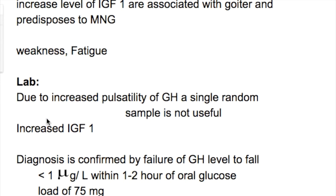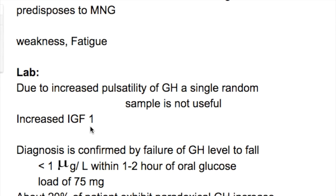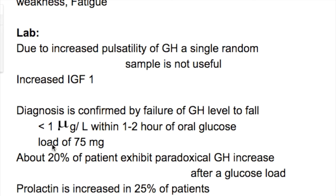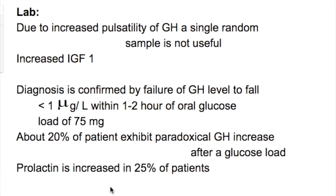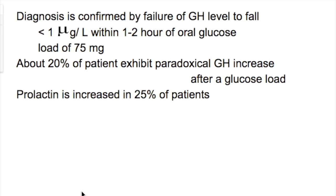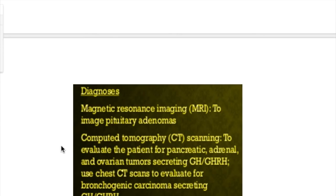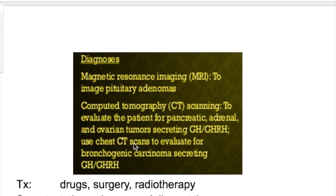What are the lab findings in acromegaly? Due to increased pulsatility of GH, a single random sample is not useful. There is increased IGF-1. Diagnosis is confirmed by failure of growth hormone levels to fall to less than one microgram per liter within one to two hours of an oral glucose load of 75 milligrams. About 20 percent of patients exhibit a paradoxical growth hormone increase after the glucose load. Prolactin is also increased in 25 percent of patients. MRI is done for pituitary adenoma imaging, and CT is done for ectopic production in the body.